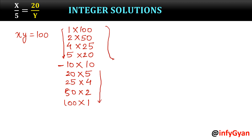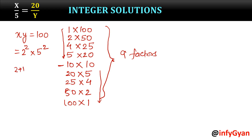There are total 9 factors by the formula as well. The formula gives us 2 raised to the power 2 times 5 raised to the power 2, so (2+1) times (2+1) equals 3 times 3 — that means 9 factors. If you want to write your answer, then we can write it in ordered pairs.